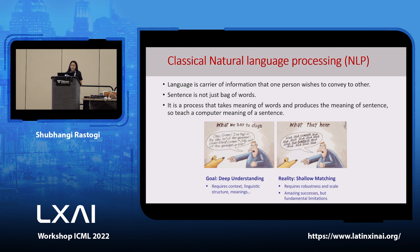Classical natural language processing: language is a carrier of information, the way we convey things. Sentences are not just a bag of words — it is a process that produces the meaning of a sentence, so that we can teach machines the exact grammatical structure, context, and linguistic aspects. The goal is deep understanding, but the reality is often shallow matching. NLP techniques are employed to handle such tasks.